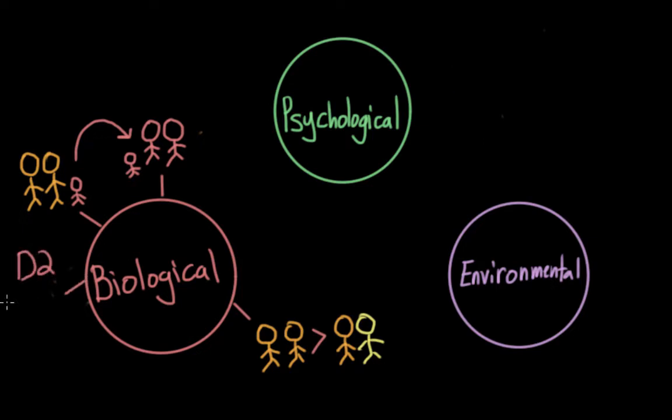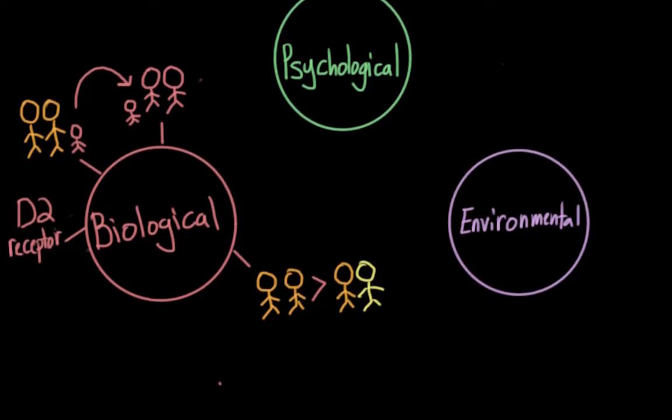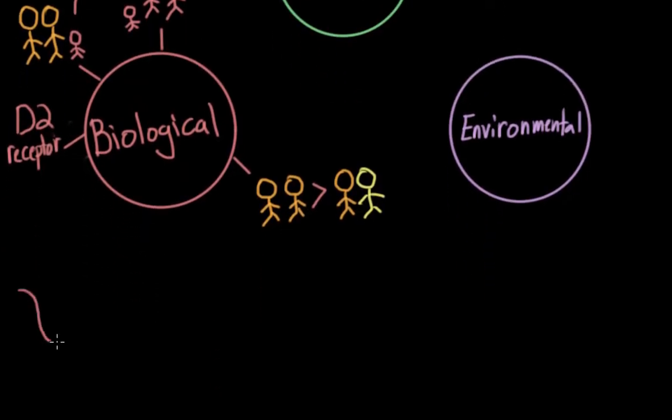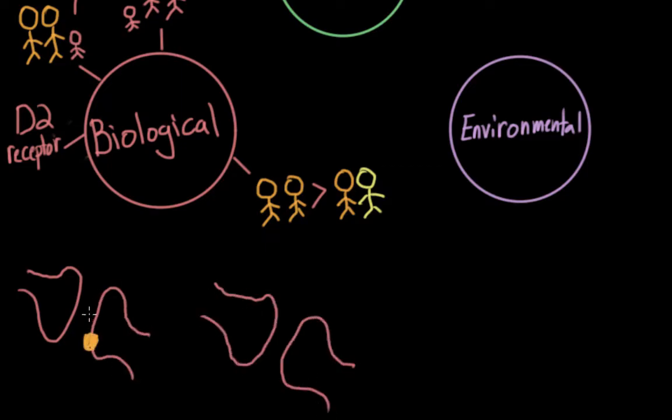Another biological risk factor has to do with the D2 receptor, which is a type of dopamine receptor in the reward circuitry of the brain. Some studies suggest that individuals with fewer D2 receptors might have a higher risk of addiction than those with a typical amount of receptors.